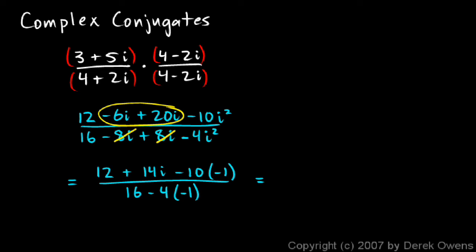So let's simplify it a little bit further. I can combine this 12 and this minus negative 10, so that's 12 plus 10, that's 22. So I have 22 plus 14i up top. And on the bottom, I have 16 plus 4, or 20. And I can simplify this one step further just by dividing everything by 2.